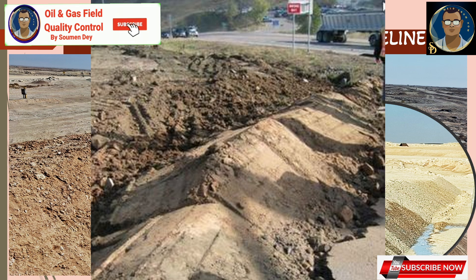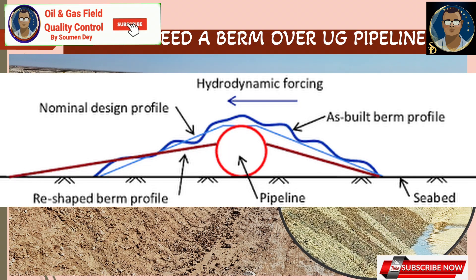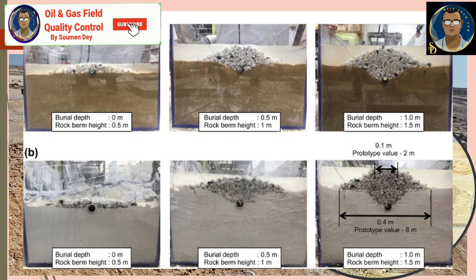Berms can also filter sediment as water passes through them. Pipeline stabilization can be one of the purposes. Berms, especially if made of rock, can increase the resistance of the soil surrounding the pipeline, making it less likely to move laterally or vertically due to external forces or changes in soil condition.